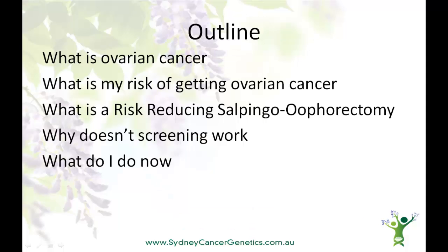This presentation is about ovarian cancer: what it is, what the lifetime risk of getting ovarian cancer may be, and ways to reduce that risk. Specifically, we'll talk about a surgical procedure called a Risk-Reducing Salpingo-Oophorectomy, and why surgery is really the only effective way for a woman at increased risk to reduce that risk. Finally, we'll explain who should see a genetic oncologist or hereditary cancer clinic, and how to go about doing that.